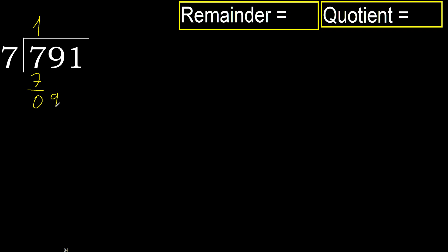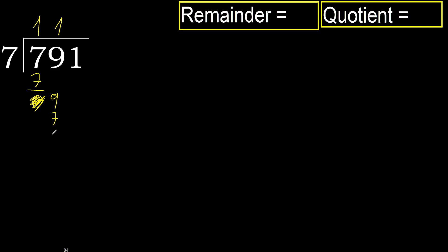Next, bring down the 9. 7 multiplied by 2 is 14, which is greater. Multiply by 1: 7 is not greater.